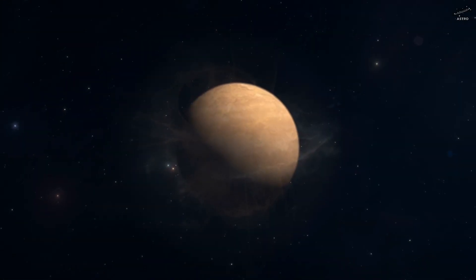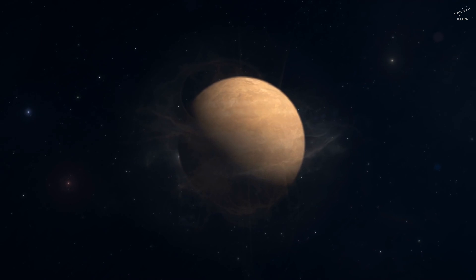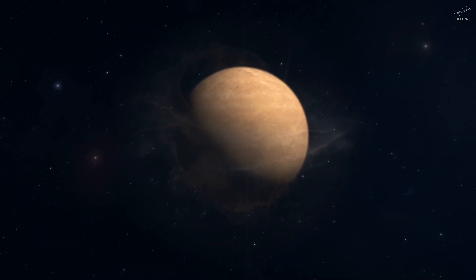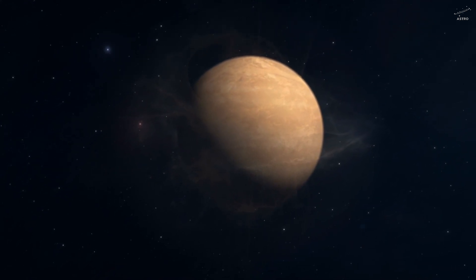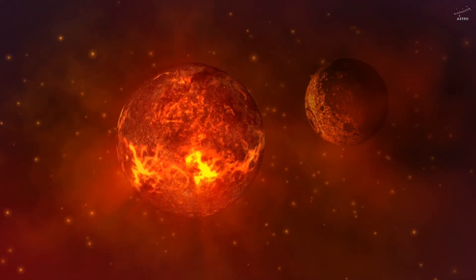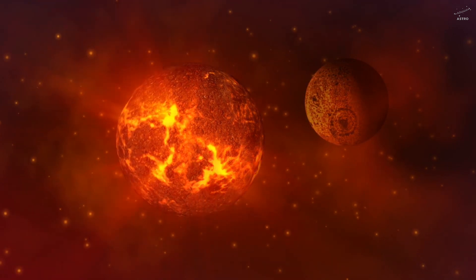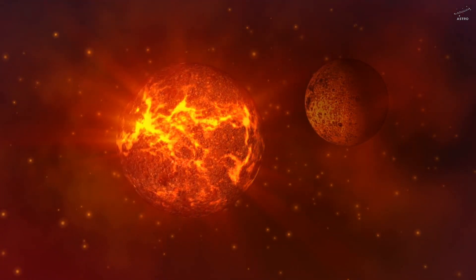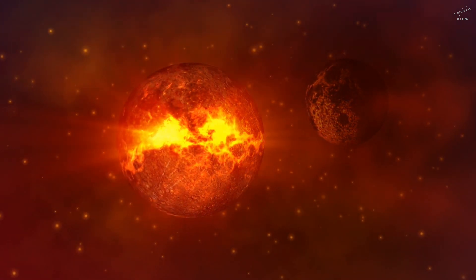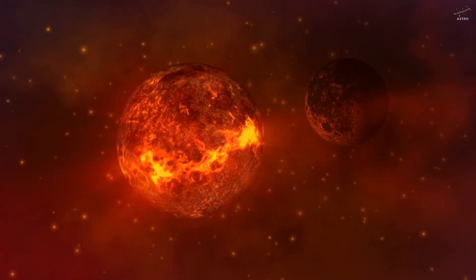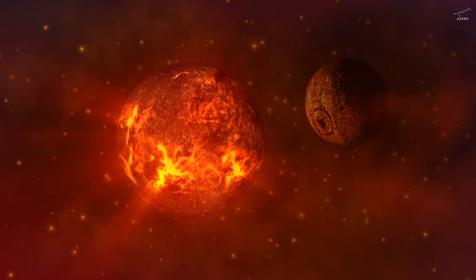Now, if it were about 13 times heavier, it would cross a strange threshold. It would become a brown dwarf, a so-called failed star that burns deuterium but never shines as brightly as a true star. There are fascinating theories that ask, what if, in the early days, Jupiter had gathered more mass? Could it have crossed that limit? Could our solar system have become a binary system with two suns shaping the orbits of planets?